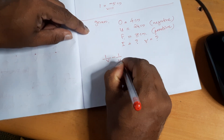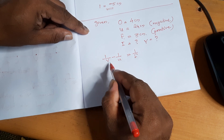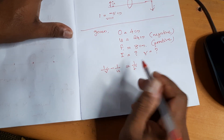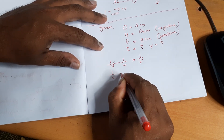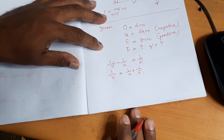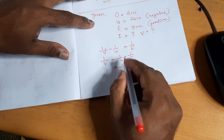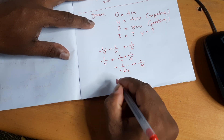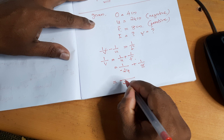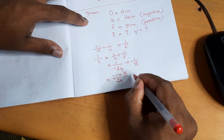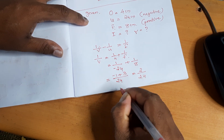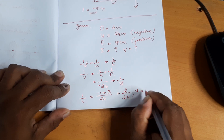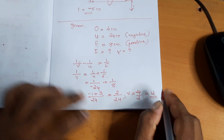Using the lens formula: one by V minus one by U equals one by F. So one by V equals one by U plus one by F, which is one over minus 24 plus one over 8. This gives minus one plus three over 24, equal to 2 by 24. Therefore one by V equals 2 by 24, so V equals 24 by 2, which equals 12 centimeters.